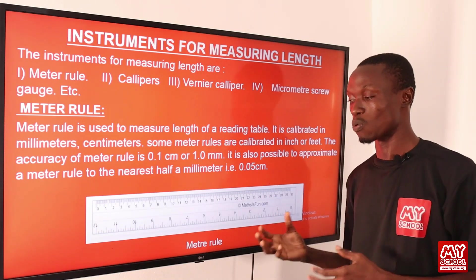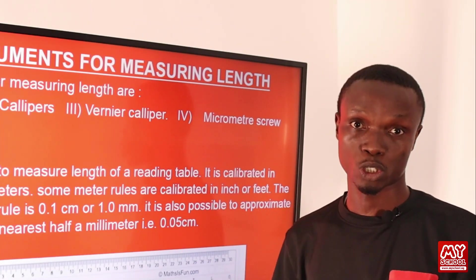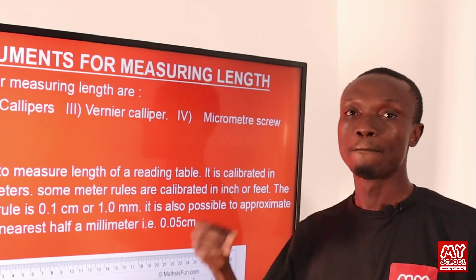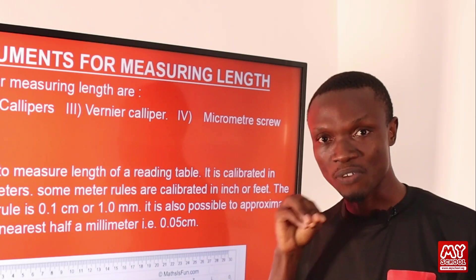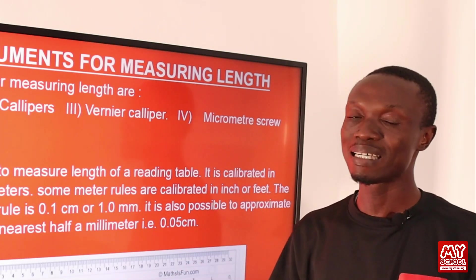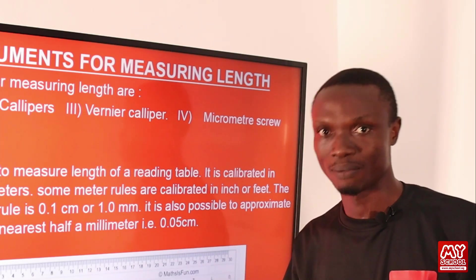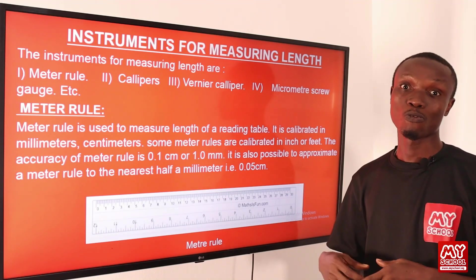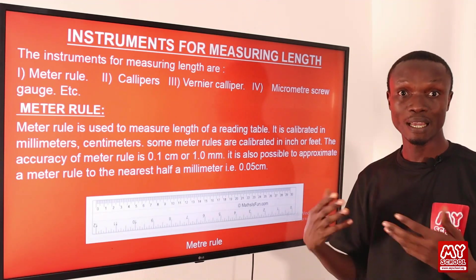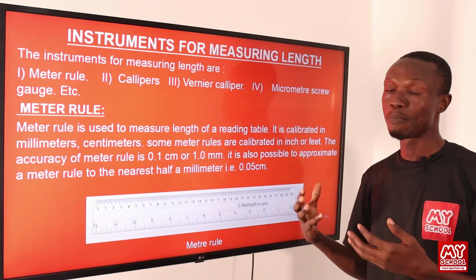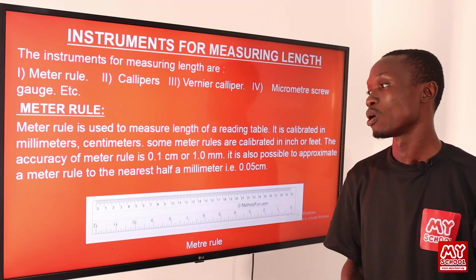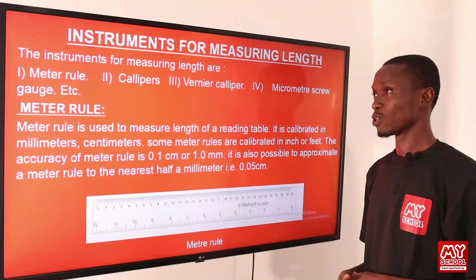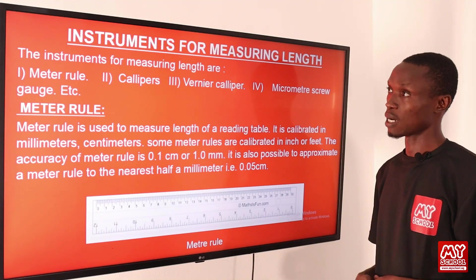When using the meter rule to measure an object, a necessary precaution must be taken in order to avoid error due to parallax, by looking vertically downward on the markings instead of at a slight angle. For larger distances such as the length of a football pitch or the length of a farmland, we can make use of a tape rule calibrated in meters.